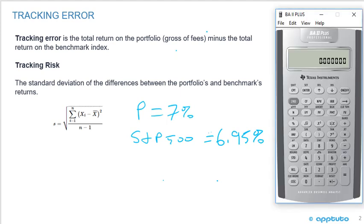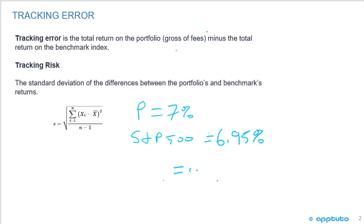That's going to be 7% minus 6.95%, which is easy - it's 0.07 minus 0.0695. So we would have a tracking error of 0.0005, equals 0.0005.